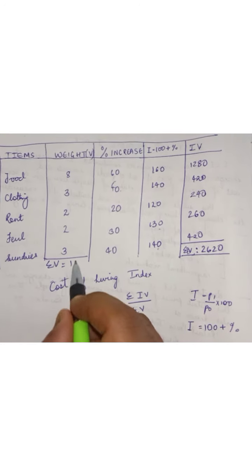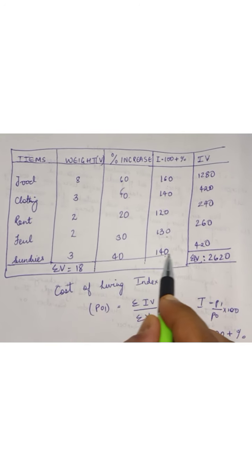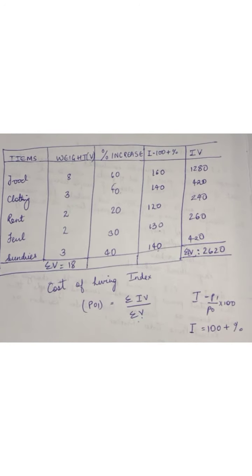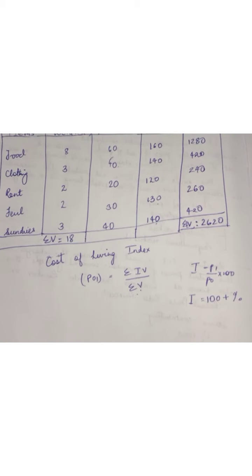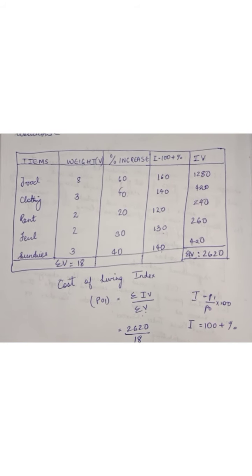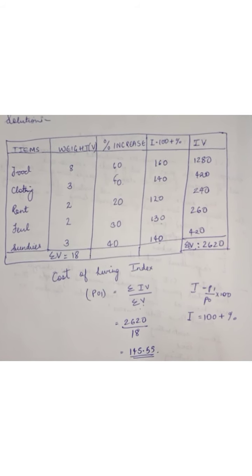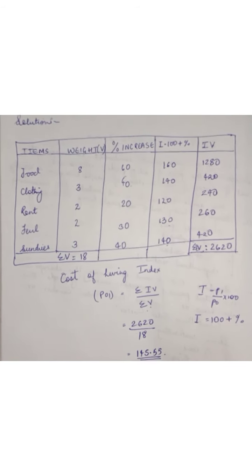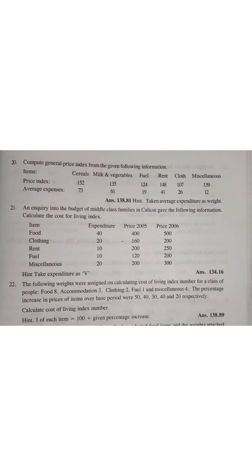The commodities given are food, clothing, rent, fuel, and sundries. Summing up I×V gives 2620 and summing V gives 18. The cost of living index = 2620 ÷ 18. Note that instead of prices, the percentage increase in price over 2012 was given, so we added 100 to get I, then multiplied I by weight W to get I×W for each item before applying the main formula.